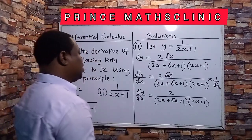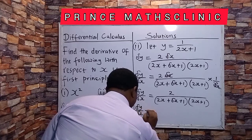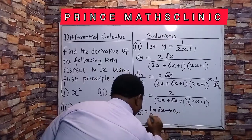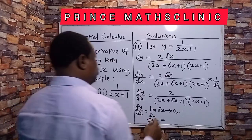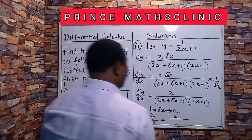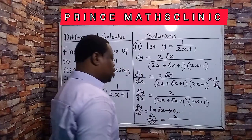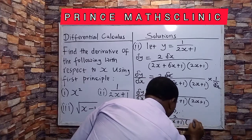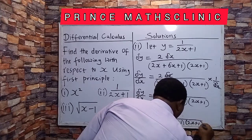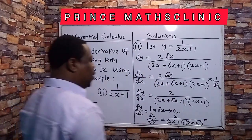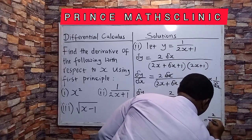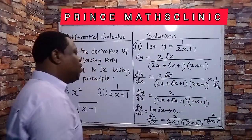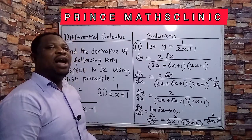At this stage you take limits. dy/dx equals the limit as dx tends to 0. Wherever I see dx I put 0, so this becomes negative 2 over (2x plus 1)(2x plus 1). I can leave the answer like that, or write it as negative 2 over (2x plus 1) squared. That is the value of dy/dx.